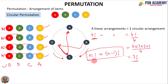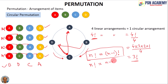In specific cases where direction is only one way — either clockwise or anticlockwise — then n! linear arrangements give (n−1)!/2 circular arrangements.